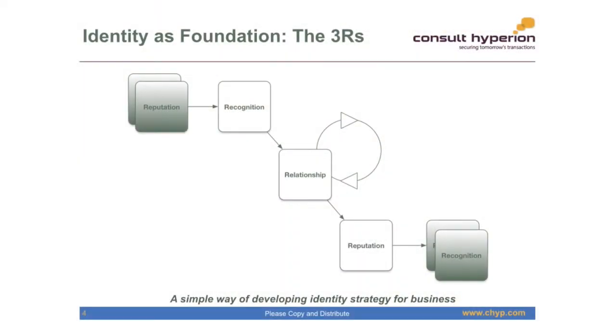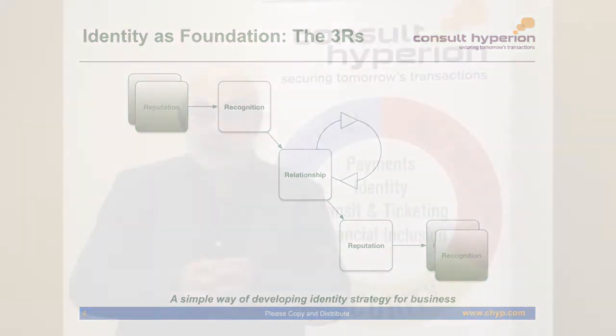When we're talking about the relationship between identity and other businesses — whether payments or any other business — we have quite a simple and useful model that we call the Three R's model. We talk about recognition, relationships, and reputation, and I'll just take you through each of those to see how they help to frame the discussion.